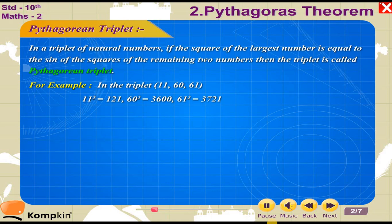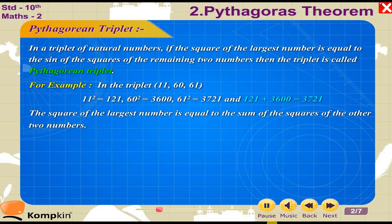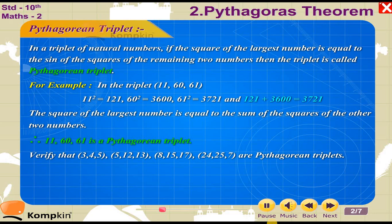11 square is equal to 121, 60 square is equal to 3600, 61 square is equal to 3721, and 121 plus 3600 is equal to 3721. The square of the largest number is equal to the sum of the squares of the other two numbers. Therefore, 11, 60, 61 is a Pythagorean triplet.